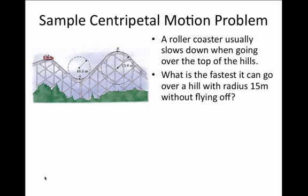In this problem we're going to ask what is the fastest that a roller coaster can go over such a hill on the track if the radius of curvature of the hill is approximately 15 meters.